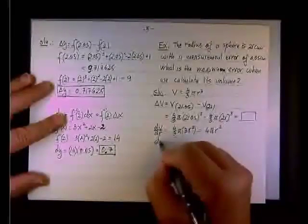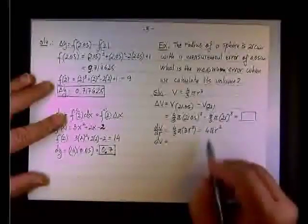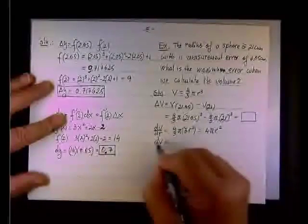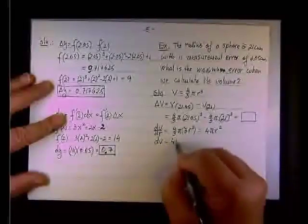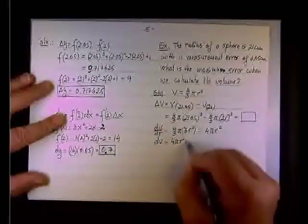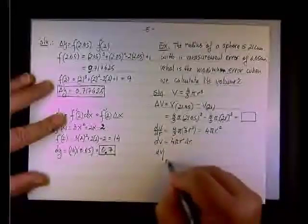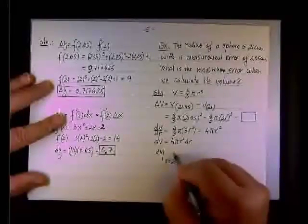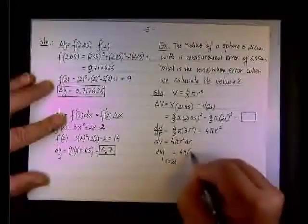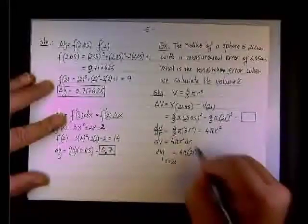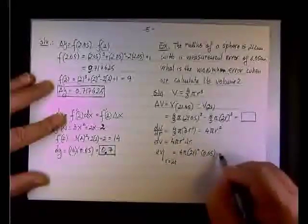dv itself, if you recall, will be, you multiply by dr, and you have 4 pi r squared dr. And then dv, when r equals 21, is simply 4 pi times 21 squared, dr is 0.05.